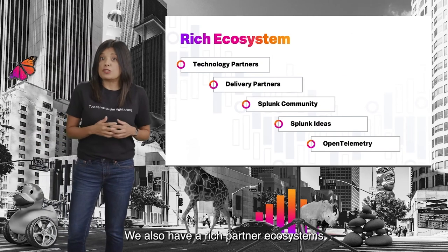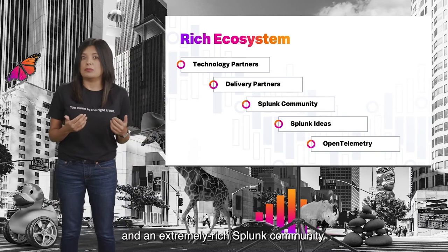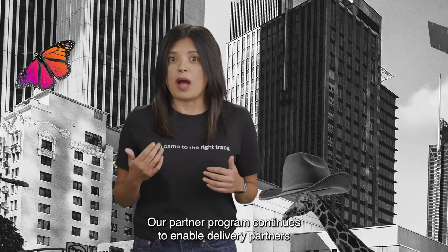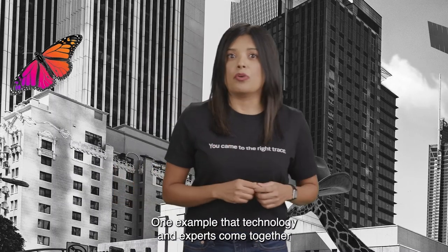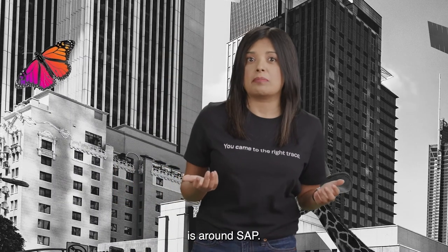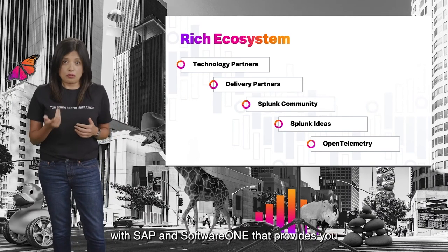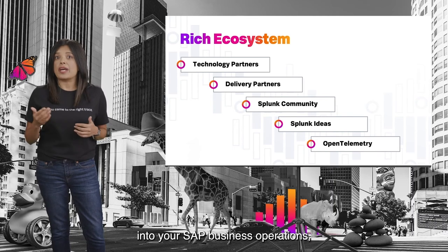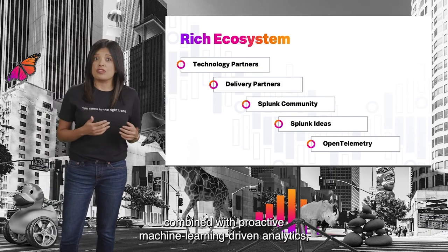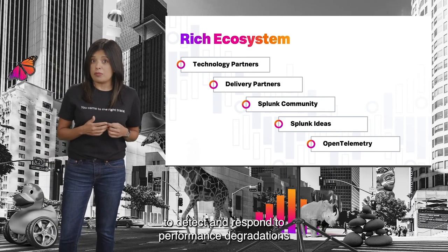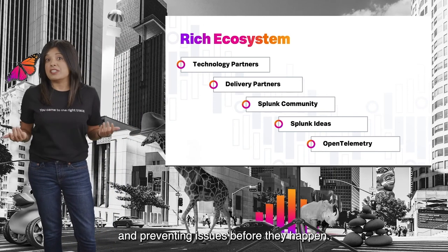We also have a rich partner ecosystem that gives you access to technology partners and an extremely rich Splunk community. Our partner program continues to enable delivery partners to accelerate your path to value. One example where technology and experts come together is around SAP — we've entered a strategic partnership with SAP and SoftwareOne that provides end-to-end visibility into your SAP business operations, combined with proactive machine learning-driven analytics to detect and respond to performance degradations and prevent issues before they happen.